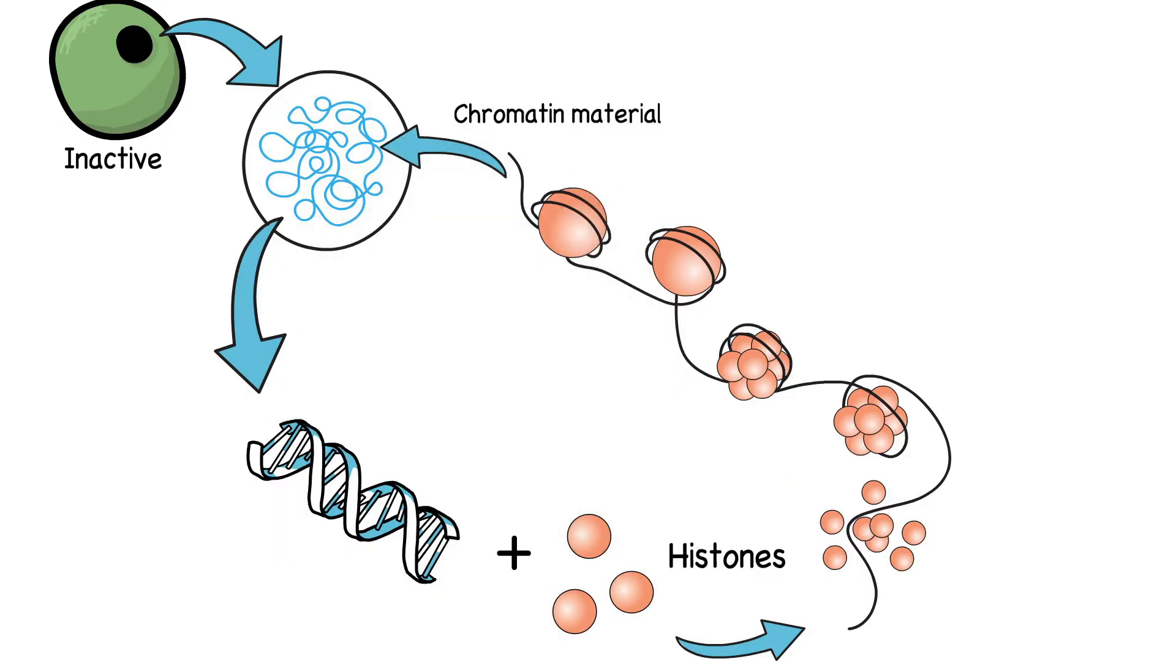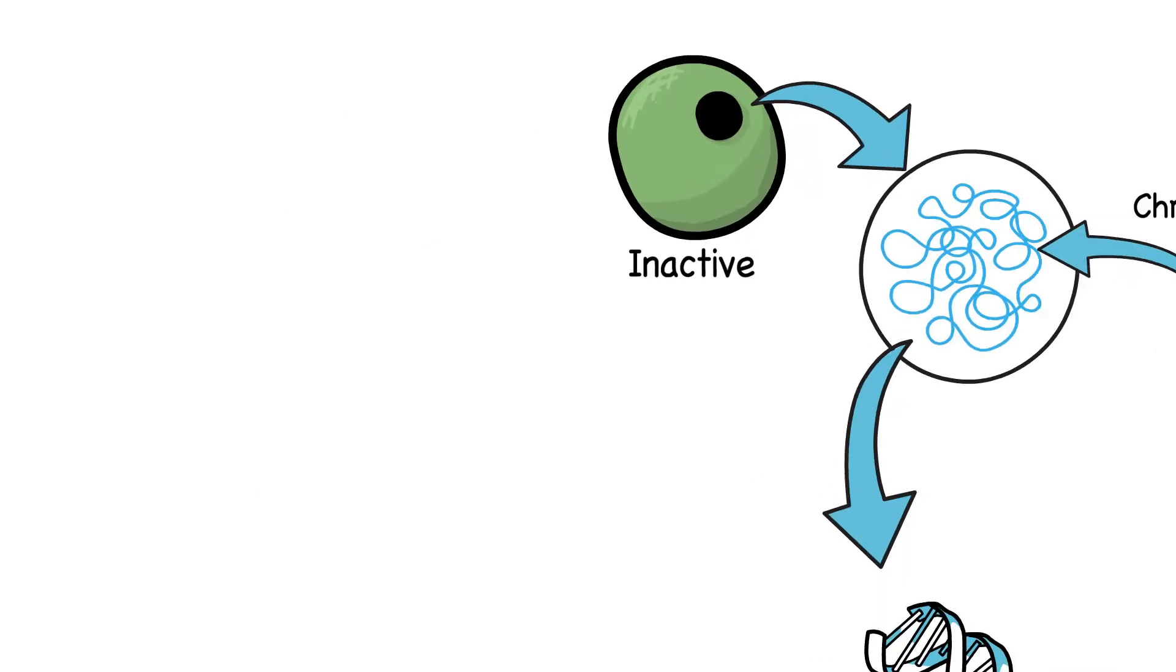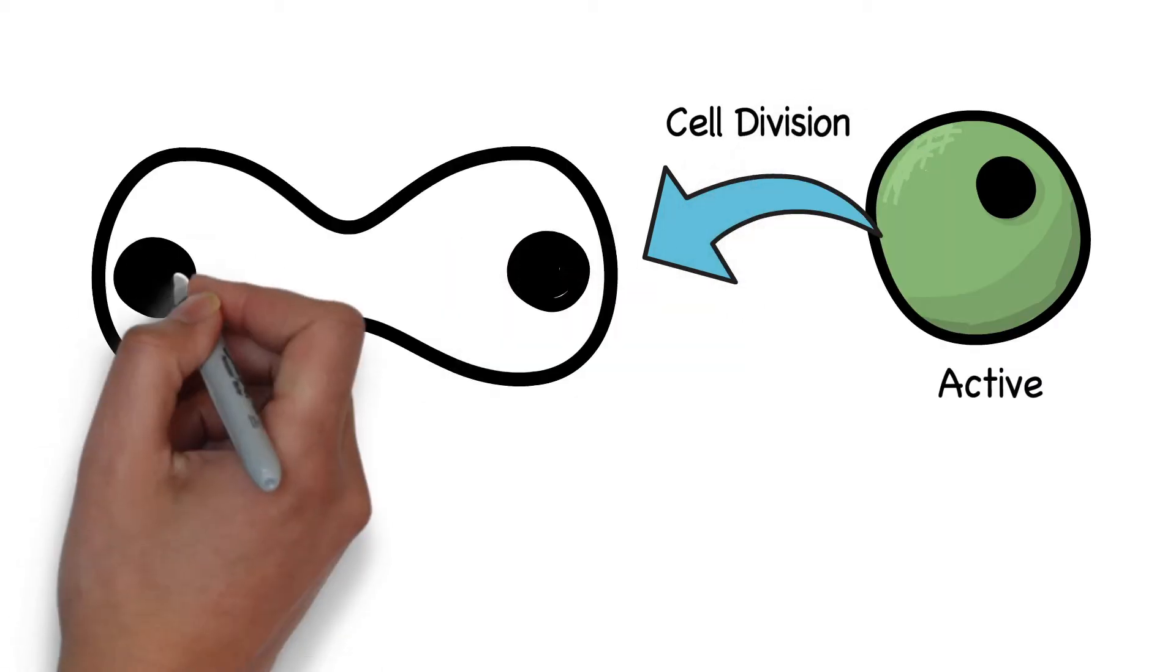Hence, we can say chromatin is a semi-condensed form made up of DNA plus proteins. Now, when the cell comes into active state, it prepares itself to divide into two daughter cells under the process called cell division.